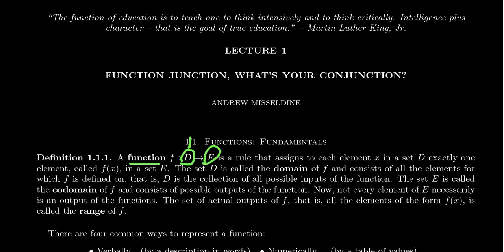D itself will be some collection of numbers. E will be some collection of numbers. The set D right here is typically called the domain of the function. This would be the set of all possible input. Some people like to think of a function as a machine that when you put something into it, it pops something out.